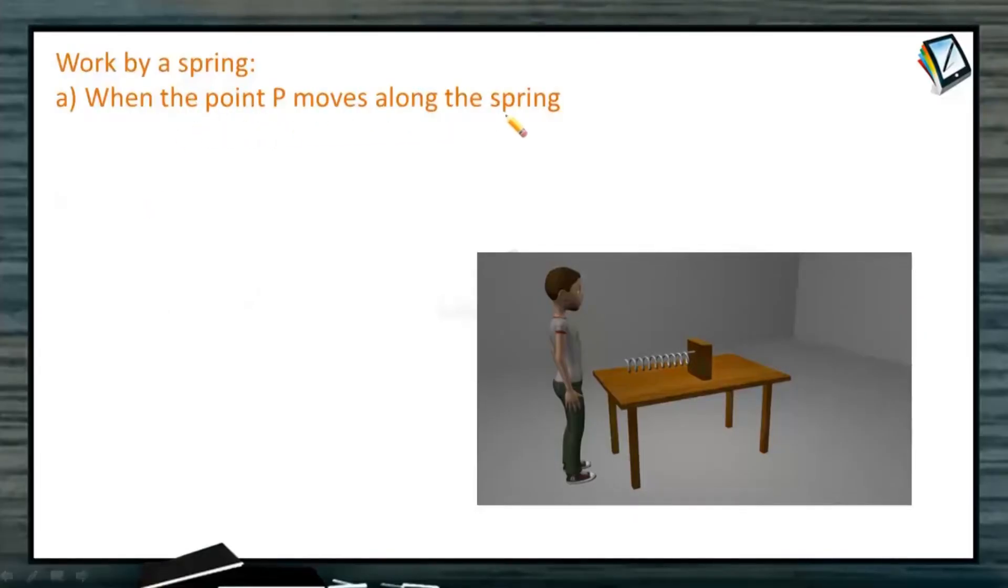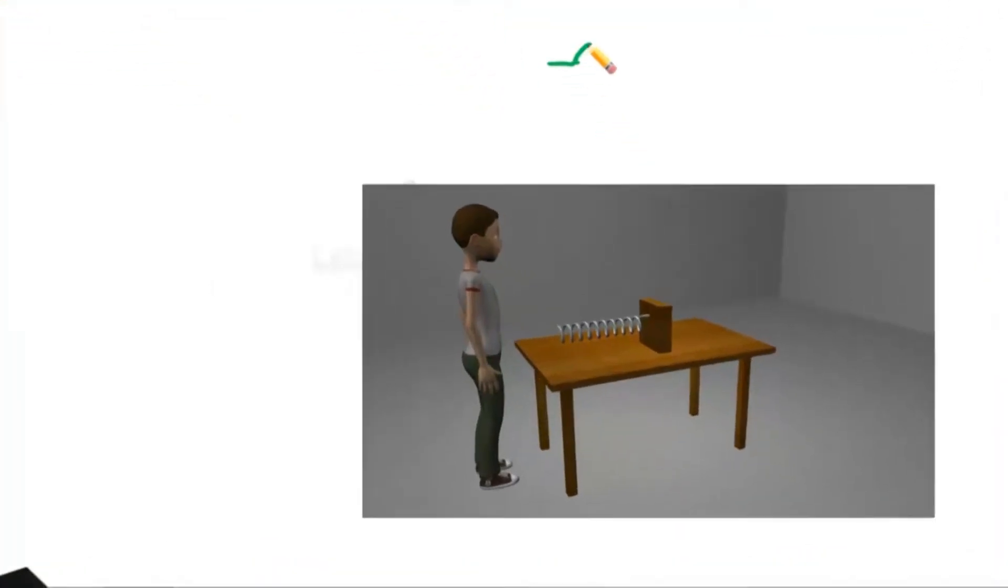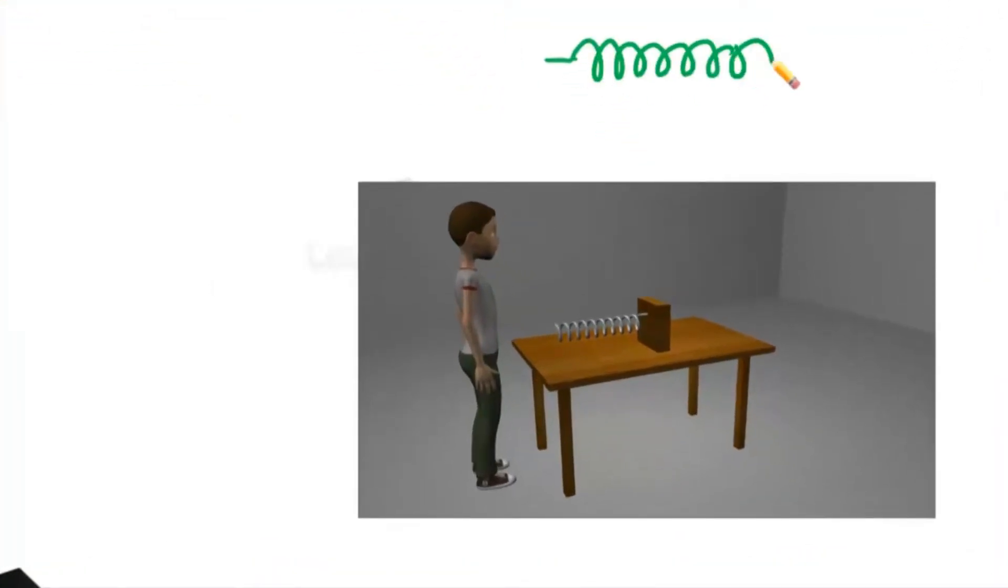Now work done by a spring. When the point P moves along the spring, let us consider this is the spring, fixed at one end. I will take a point P here at this corner. Now when a force is applied, this point P moves along the spring, that is parallel to this point.